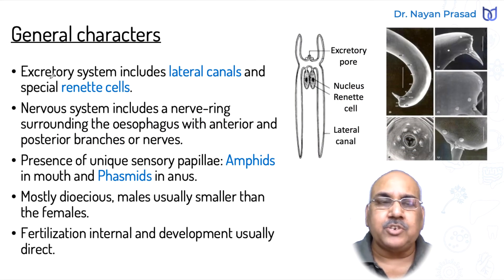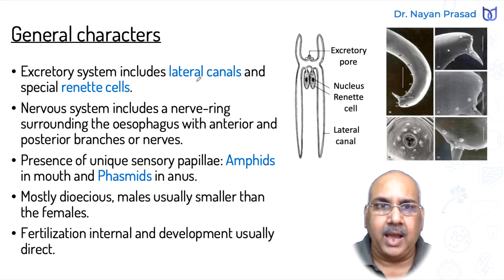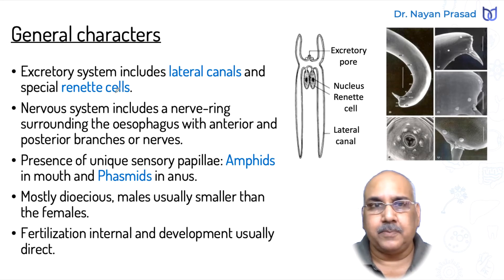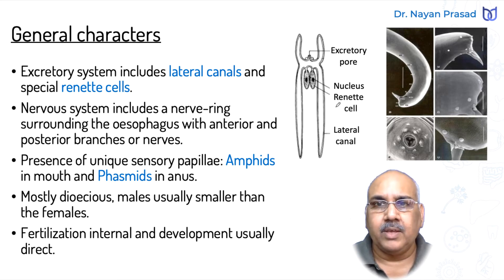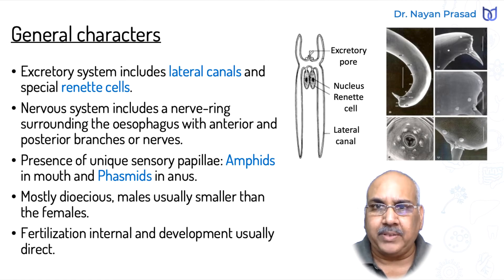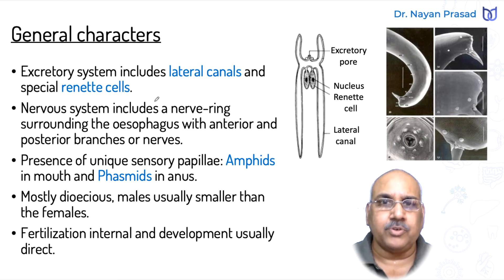Regarding excretion — the process of removing metabolic waste — in these members the excretory system includes lateral canals. In the diagram, you may see the anterior and posterior lateral canals on the lateral sides of the body. These lateral canals are connected with special glandular cells called renet cells. Renet cells help in removing metabolic waste from the body, which is discharged into the lateral canals and finally exits through an excretory pore. Renet cells are peculiar and special features found in Nemathelminths.